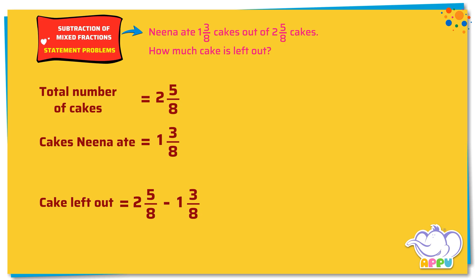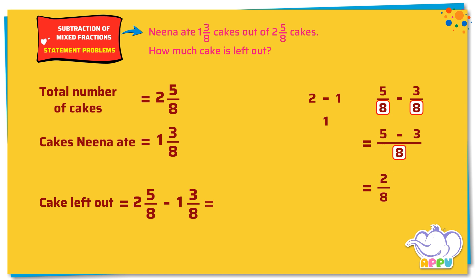We subtract the whole numbers first. 2 minus 1 equals 1. Then we subtract the fractions: 5/8 minus 3/8. We see that the denominators are the same for both the fractions — that is 8. We write the denominator as 8, and we subtract the numerators. 5 minus 3 equals 2. The answer is 1 2/8. So, 1 2/8 cakes is left out.